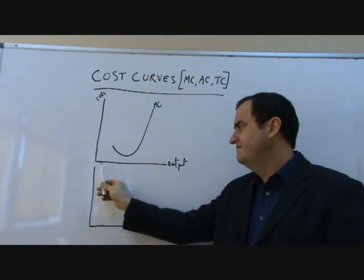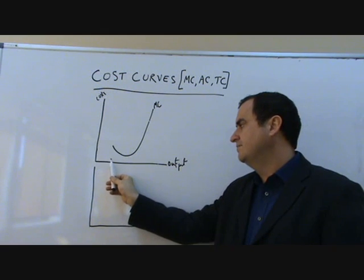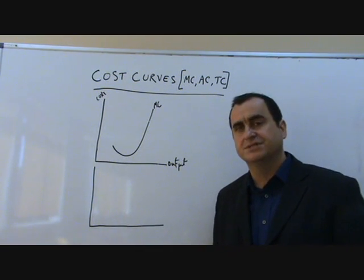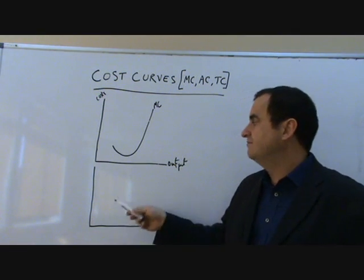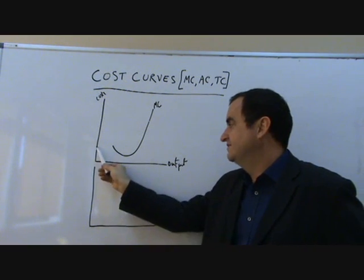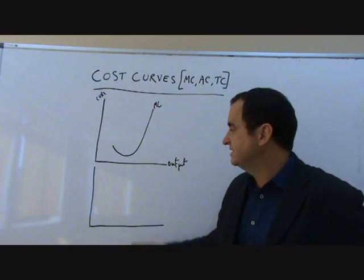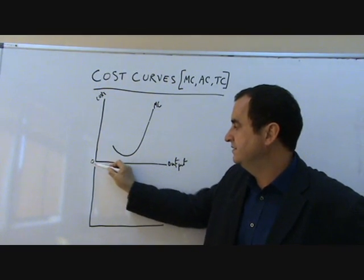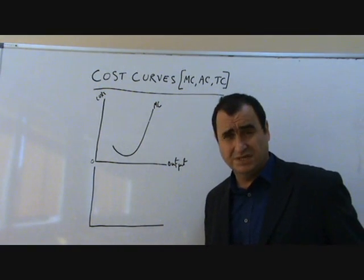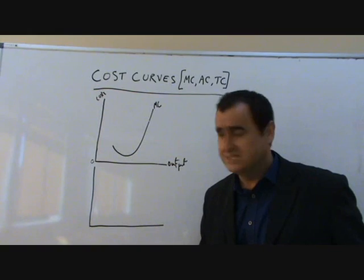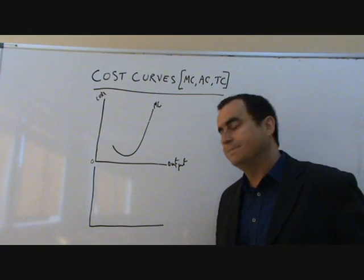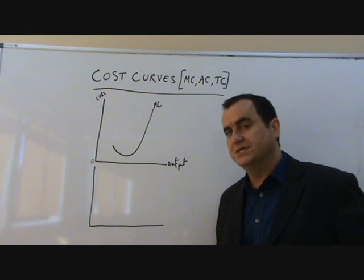This is implying that at first, as we create more output, the extra cost, the marginal extra cost of producing one more unit, is falling. Of course, there is a marginal cost. That's why the curve is always above zero. There is always a cost to making another unit, but that cost is not always the same because of diminishing marginal returns.